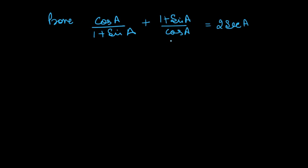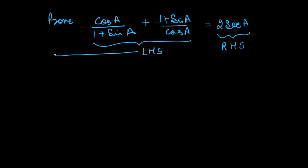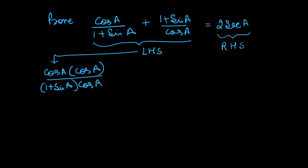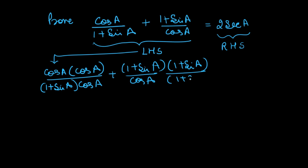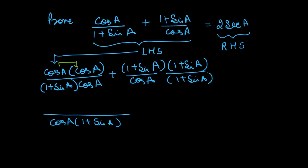Whenever you solve a trigonometric identity, you can proceed from the left-hand side or the right-hand side. Here, the left-hand side looks more complicated, so I will solve the LHS and bring it equal to the RHS. I will make a common denominator by multiplying the first expression by cosec A in the numerator and denominator, and the second expression by (1 + sin A) in the numerator and denominator. The common denominator becomes cosec A × (1 + sin A). In the numerator, cosec A × cosec A gives cosec²A.